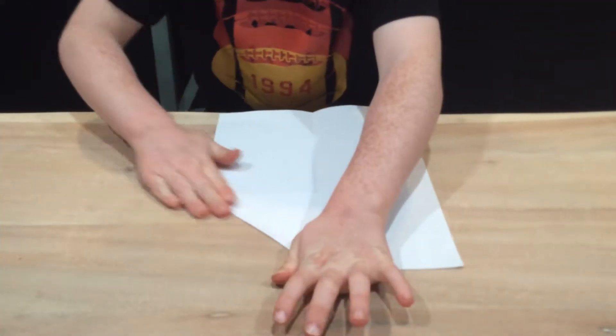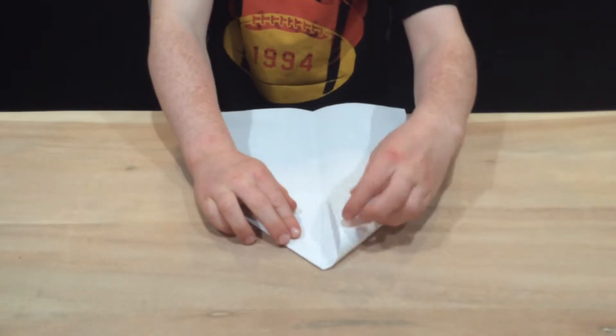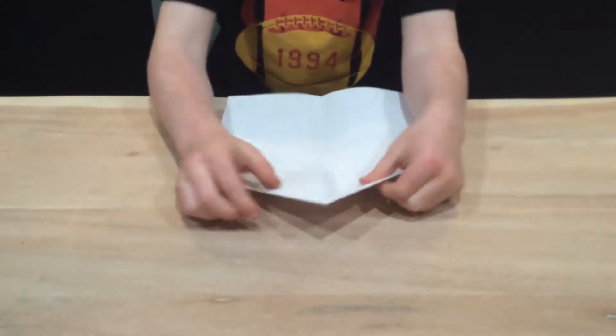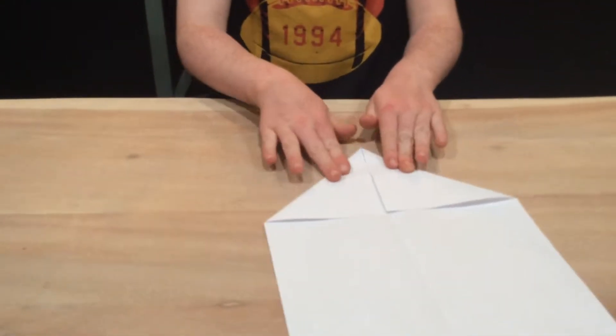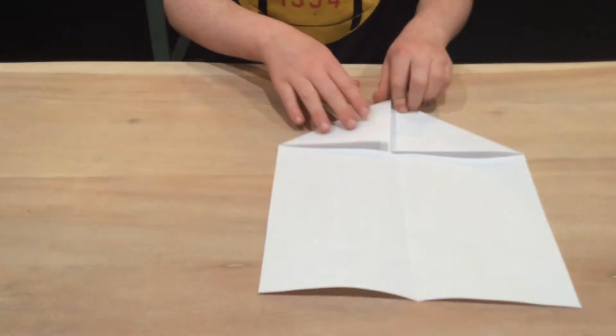Then you fold these two corners to make a triangle shape. Now you should have this like a house.